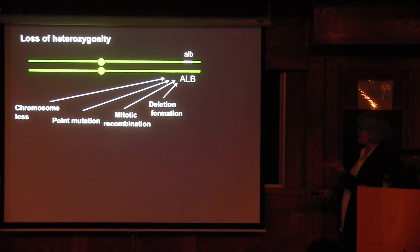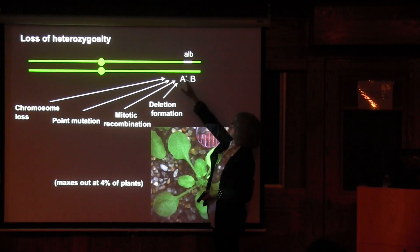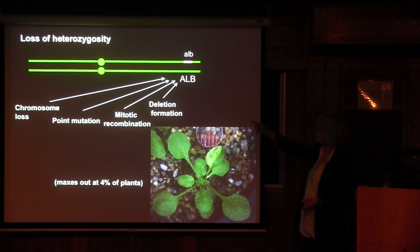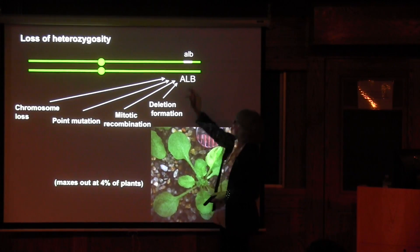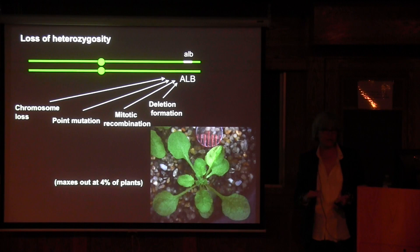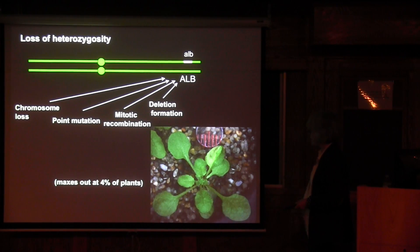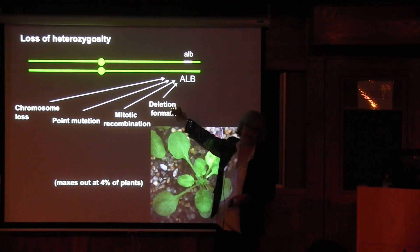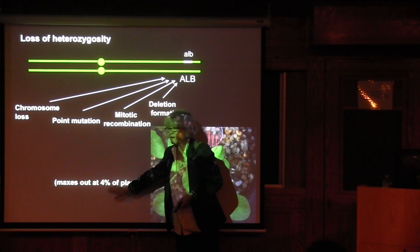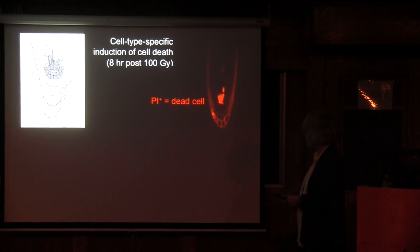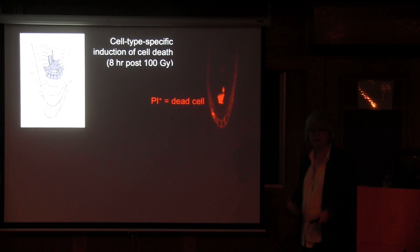Another thing we can look at is mutagenesis. We have an assay where we have a marker that causes albinism — selecting for heterozygotes that are green and buster-resistant. We irradiate those seeds and ask what the rate of sectoring is. Without irradiation, the rate is zero. But if you irradiate, you can produce sectors reflecting chromosome loss or breakage. It maxes out at about 4% of plants because plants get smaller and smaller as part of their programmed DNA damage response. The sectoring mutagenesis itself is hard to believe is programmed — that is a toxic effect of ionizing radiation.